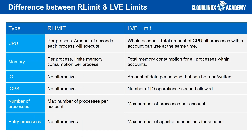Let's compare LVE and Apache mod_lve limits. Apache's CPU limit is set per process — it is the number of seconds each process will execute before being killed. It does not limit the total amount of CPU that can be used at the same time by an account. LVE's CPU limit is for the whole user account — it is the total amount of CPU as a fraction of a core that all processes within the account can use simultaneously. If a process tries to use more, it will be throttled.